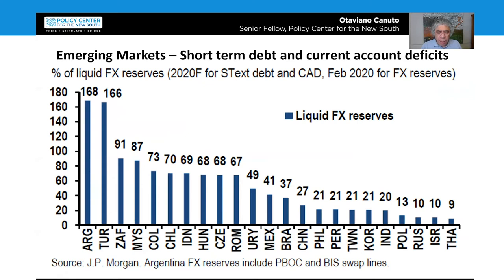Concerns about debt repayment capacity and the dollar liquidity needs of some emerging markets have particularly increased. This chart illustrates the point by highlighting some emerging markets where the sum of short-term foreign debt and current account deficits is larger or close to their liquid foreign exchange reserves. Argentina and Turkey stand out as the two countries with external funding needs in the short term not fully covered by liquid foreign exchange reserves. South Africa and Malaysia are not far behind, although with ratios below 100%.